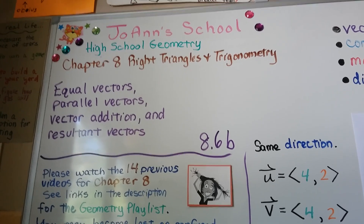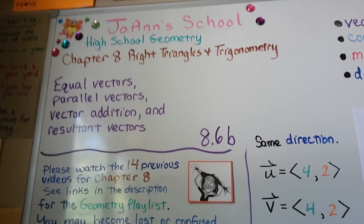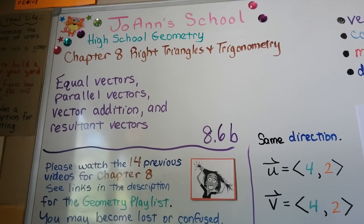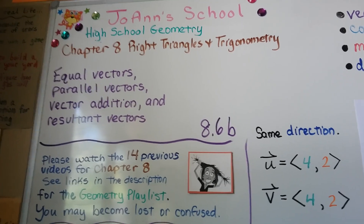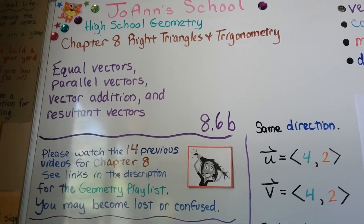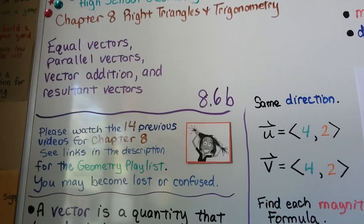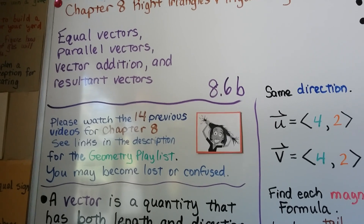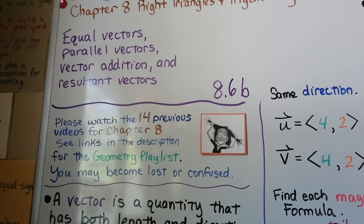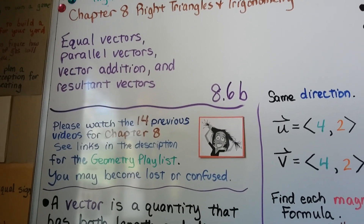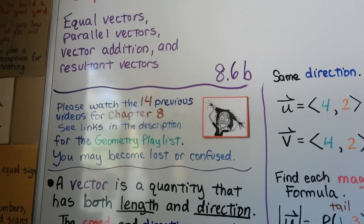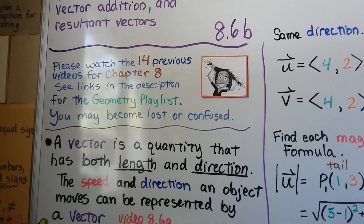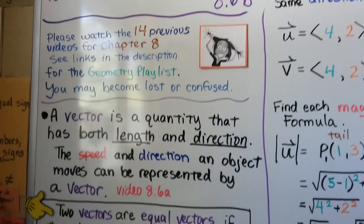Equal Vectors, Parallel Vectors, Vector Addition, and Resultant Vectors. This is lesson 8.6b. We have an 8.6a that is really important you watch it. This is the last video for chapter 8, and you could become lost or confused. It's in the description in the geometry playlist.